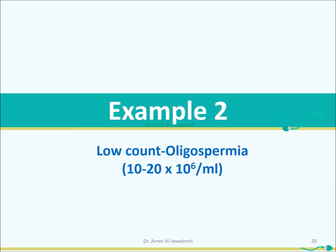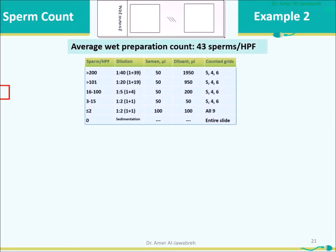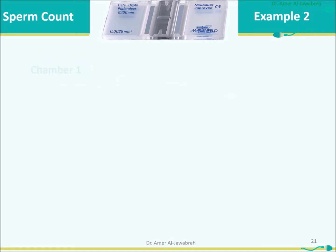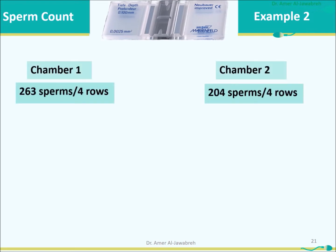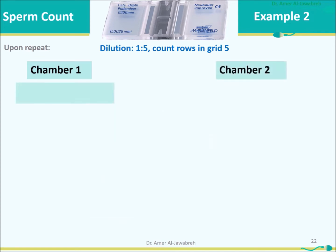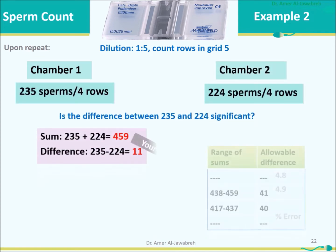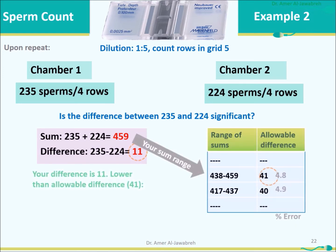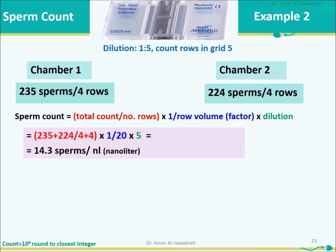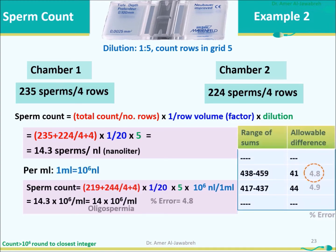Example 2 — Low count, oligospermia (10–20 million per mL). Average wet prep count: 43 per high power field; dilution is 1:5. Count 1: 263 sperms per 4 rows; count 2: 204 sperms per 4 rows. Difference of 59 is higher than allowable 45 — reject and repeat. Upon repeat, the difference between new counts is 11, lower than allowable 41 — count accepted. Based on dilution 1:5 and 4 rows in grid 5, sperm count is 14.3 million per mL, rounded to 14 million per mL. Percent error is 4.8%, which is acceptable.